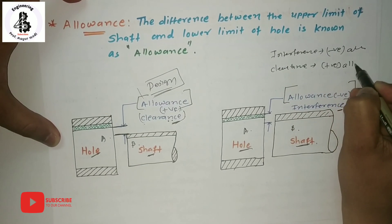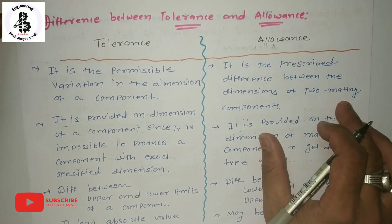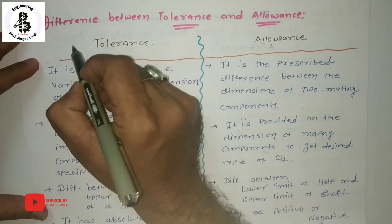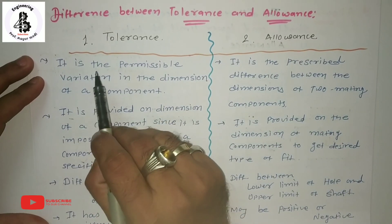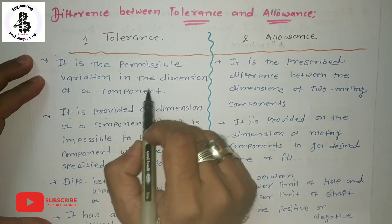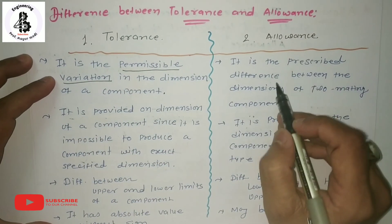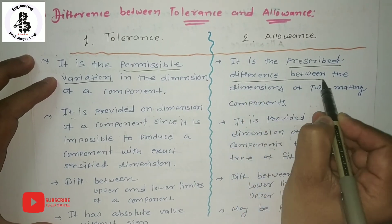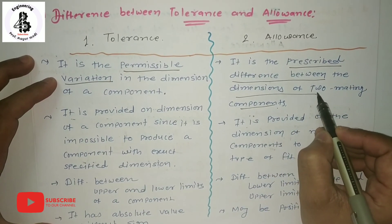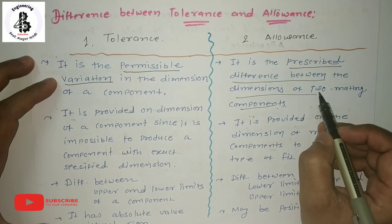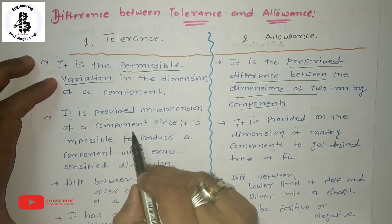So basically, two important parts: positive clearance is called a positive allowance, and interference fit is called a negative allowance. Whenever talking about interference, it is always a negative allowance, and for clearance fit it is always a positive allowance. After discussing allowances, I will now differentiate between tolerance and allowance. For tolerance, it is the permissible variation in the dimensions of a component. For allowance, it is the prescribed difference between the dimensions of mating components, which always depends on the hole system and shaft system.